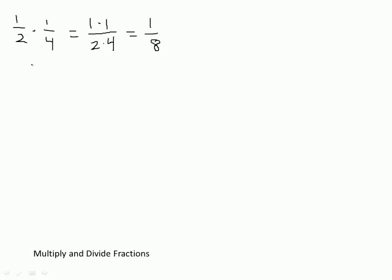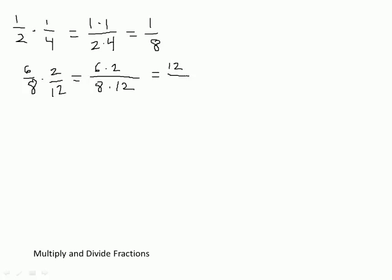What if we had a different one? We had 6 divided by 8 times 2 divided by 12. We simply draw an equal sign and say 6 times 2, and then the denominators: 8 times 12. So that equals 12 over 96. Now we want to be able to reduce this, especially if we have these in Excel and we do straight multiplication — we need to know what the reduced fraction is.